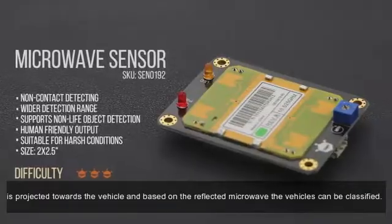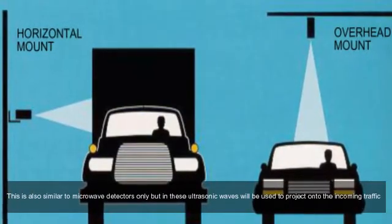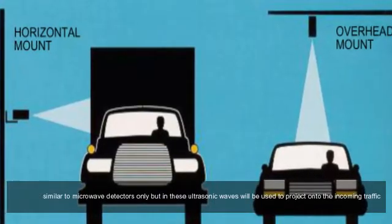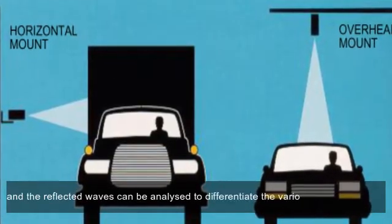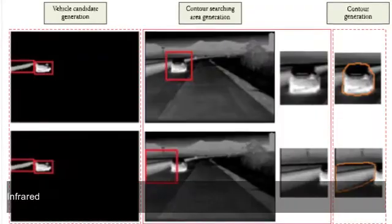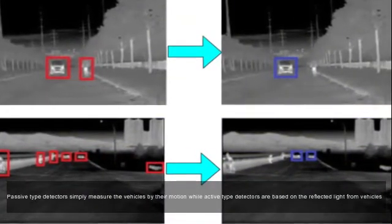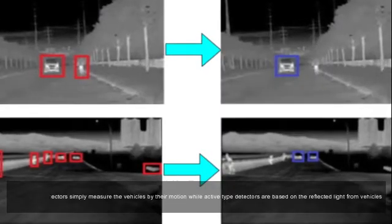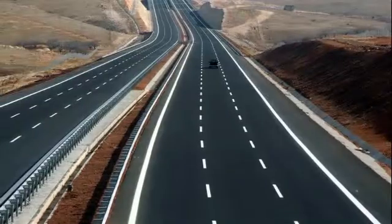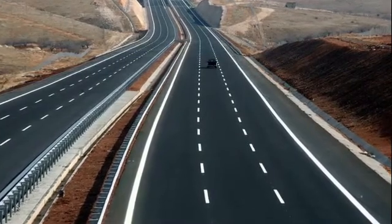Ultrasonic detectors are similar to microwave detectors, but use ultrasonic waves projected onto incoming traffic; the reflected waves are analyzed to differentiate various vehicle classes. Infrared vehicle detectors are of two types: passive type detectors measure vehicles by their motion, while active type detectors are based on reflected light from vehicles. All specifications and design-related concepts can be adopted from the Federal Highway Detector Handbook.